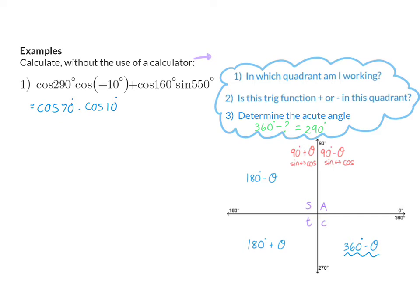And the next one is cos of 160, so now I need to go through my three steps again. Firstly, 160 is in the second quadrant, and this is where sin is positive, so second question, I will have a negative cos in the second quadrant. And now my third question, determine the acute angle. So 180 minus what will give me 160, and that means I will change it to 20 degrees.